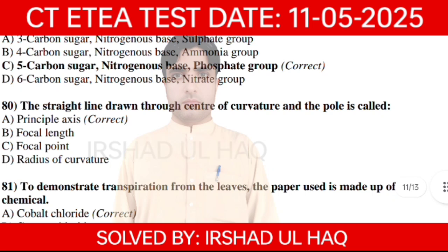The straight line drawn through the centre of curvature to the pole is called the principal axis. Option A: Principal axis.